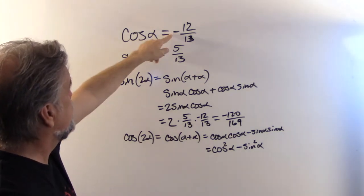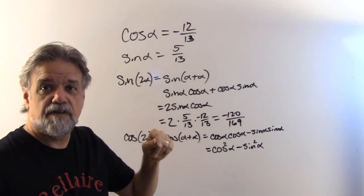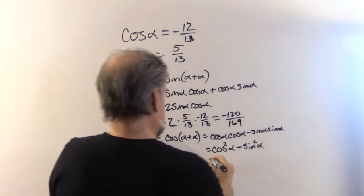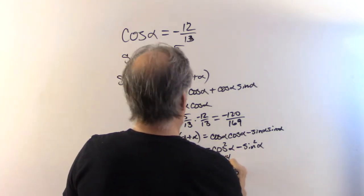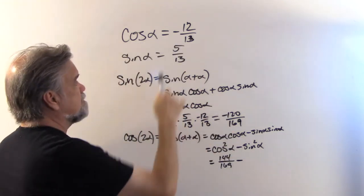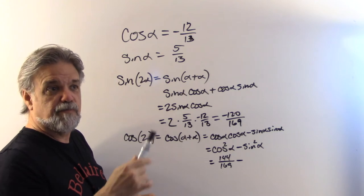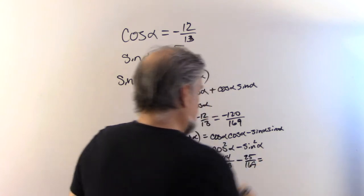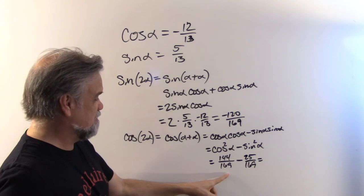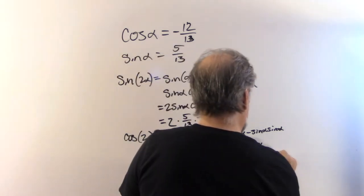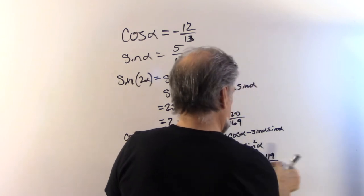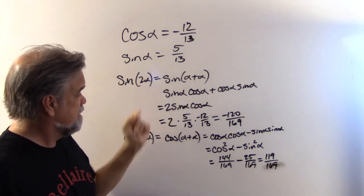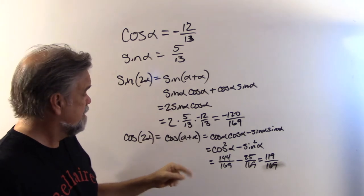That equals cosine squared of α minus sine squared of α. The cosine squared: cosine is negative 12/13, so cosine squared is 144/169. Minus the sine squared: sine is 5/13, so sine squared is 25/169. With common denominators, 144 minus 25 is 119, so the cosine of 2α is 119/169.